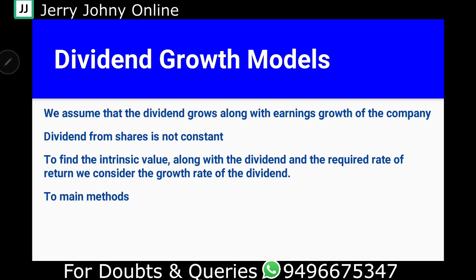This is the main method under dividend growth models. The first one is constant growth. We assume dividend grows, but at a constant rate. Please don't get confused — dividend from shares is not constant, but we assume that the dividend growth rate is constant.